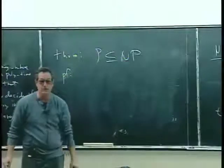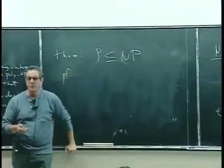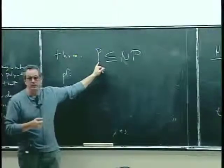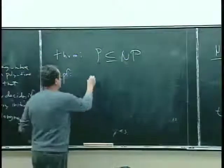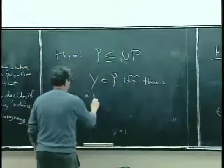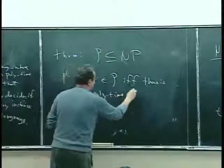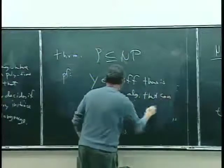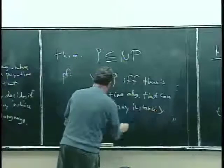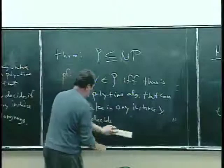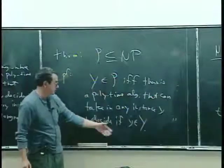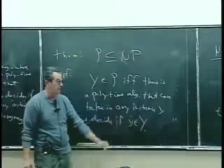How do we prove that? This is like a one-line proof if you understand the definitions. To be in P means a language Y is in P if and only if there is a polynomial time algorithm that can take in any instance little y and decide correctly if little y is in capital Y.